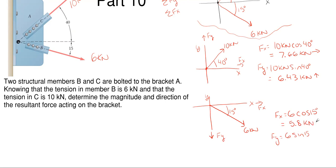So we have 5.8 kilonewtons of force to the right. And then the Fy, which is 6 times the sine of 15, gives me 1.55 kilonewtons of force acting downward.